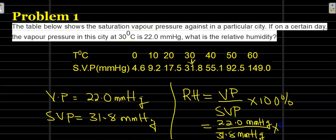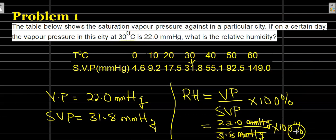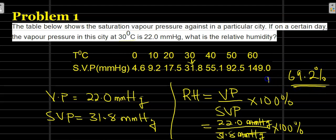So that gives us 22.0 mmHg divided by 31.8 mmHg, times 100%. The units cancel, and using a calculator we get 22 over 31.8 times 100%, which equals 69.2%. Therefore the relative humidity is 69.2%. Now let's take another example.